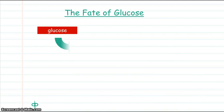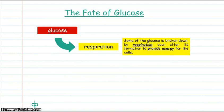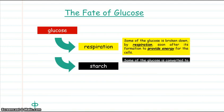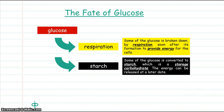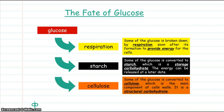Glucose from photosynthesis can be used in respiration to provide energy for the cell, can be stored as starch, a complex carbohydrate, as an energy store for use in the future, or can be used to manufacture structural cellulose.